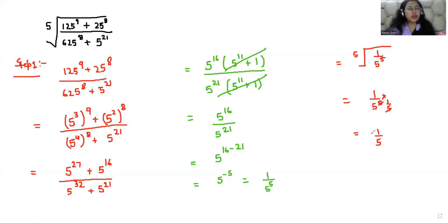So the value of the fifth root of 125 power 9 plus 25 power 8 over 625 power 8 plus 5 to the 21 is 1 by 5. I hope you find it useful. Please don't forget to give a thumbs up and subscribe to my channel for more upcoming videos.